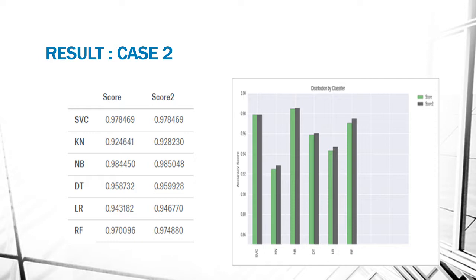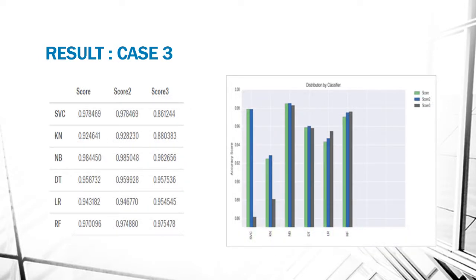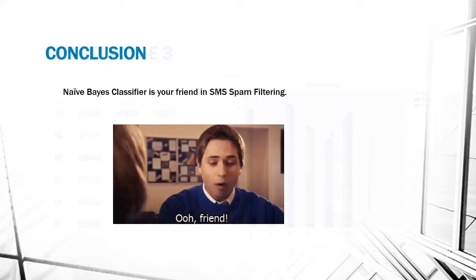In the third case when we also consider the message length, the improvement of random forest increases from 0.974 to 0.975, but still the leader is naive Bayes. So we can conclude that naive Bayes classifier is our friend when it comes to SMS spam filtering.